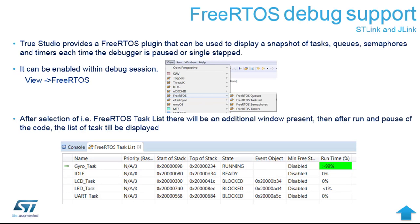From there you can list the tasks, queues, semaphores, and timers. You can find this in the Window menu under the View item, where there is a FreeRTOS entry with a list of different windows that can be activated.